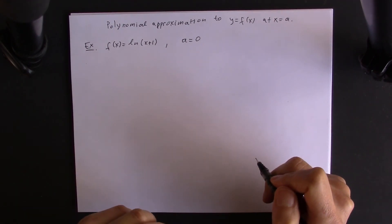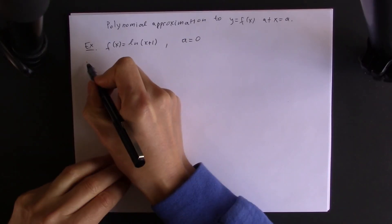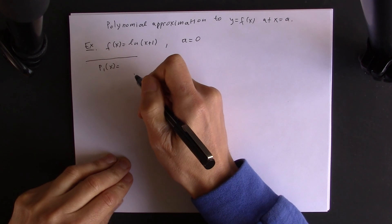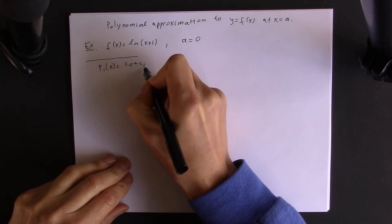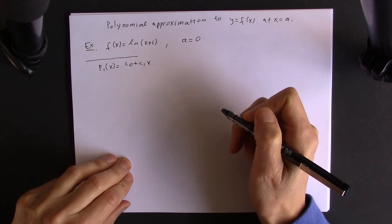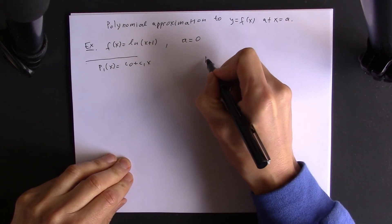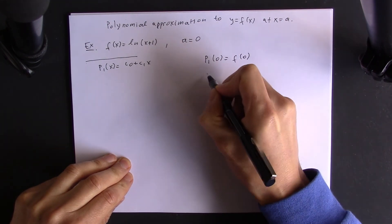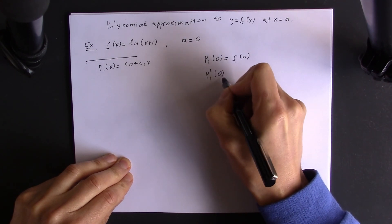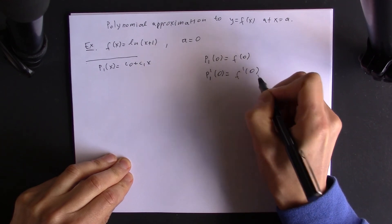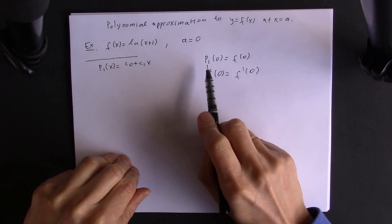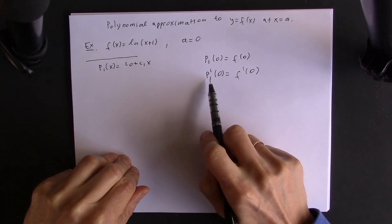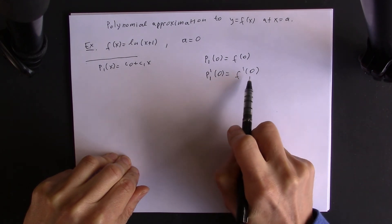We start with linear approximation. For linear approximation we want p1(x), which we write as c0 plus c1*x, or mx plus b. We want four conditions: p1(0) equals f(0), and we want the derivative of our polynomial to coincide with the derivative of the function. So we want the polynomial to pass through the point and have the same slope as our function at the given point.